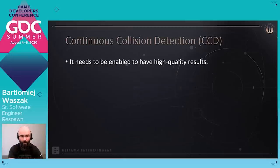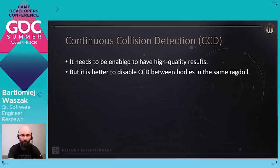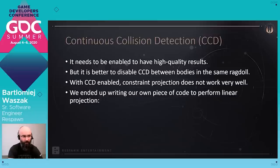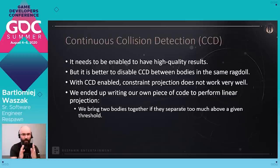Another big topic in terms of implementation details is continuous collision detection (CCD). It needs to be enabled to have really high-quality results, but it is better to disable CCD between bodies in the same ragdoll. The big problem is that with CCD enabled, constraint projection does not work very well in physics. What we did is write our own piece of code to perform linear projection for all joints — for every joint, we bring two bodies together if they separate too much above a given threshold.